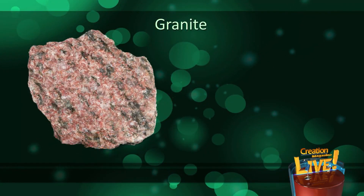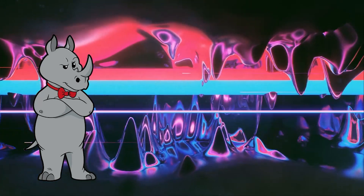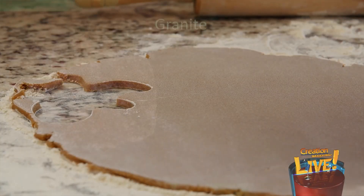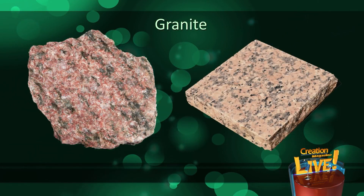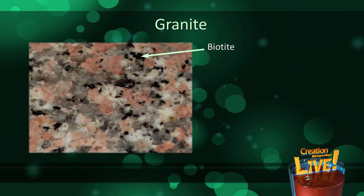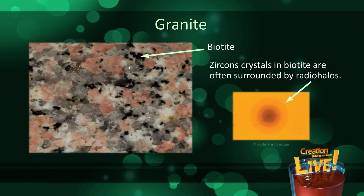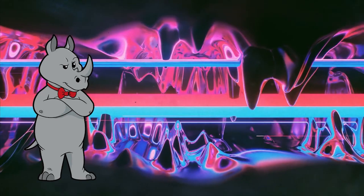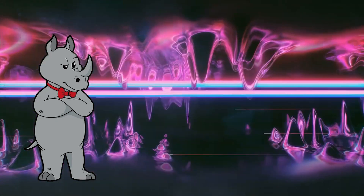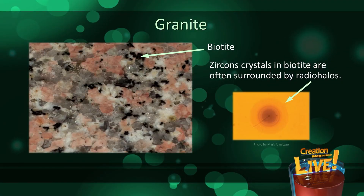On this week's episode, we're talking about radio halos ruining radiometric dating. The radio halos that we'll be discussing are found in granite. Granite often has glassy, pink and cream crystals, as well as flakes of a black shiny mineral called biotite. The biotite flakes often contain tiny crystals of other minerals, particularly zircon. The zircon crystals are typically surrounded by halos of dark-coloured rings that look like little archery targets - these are the radio halos.